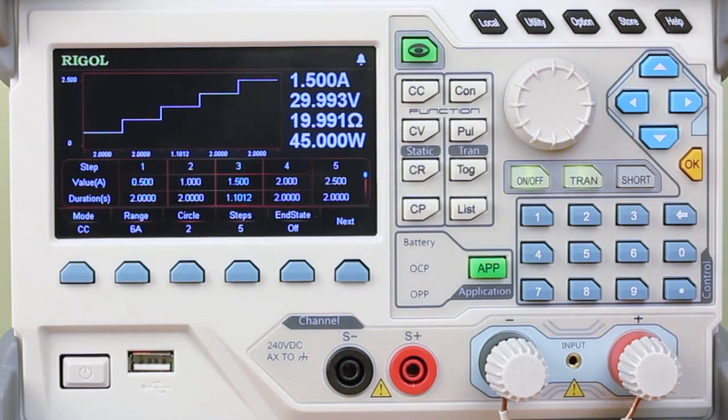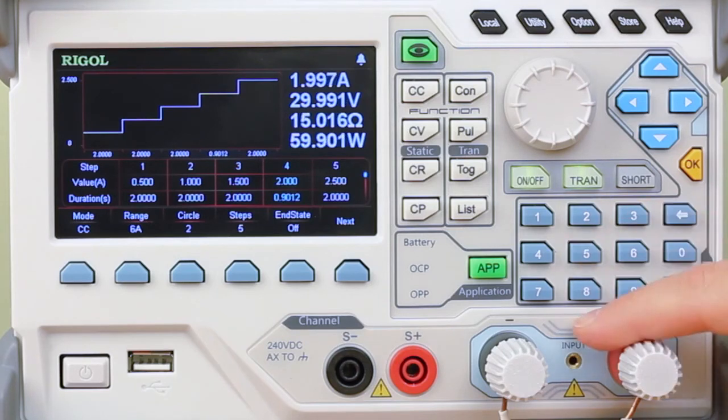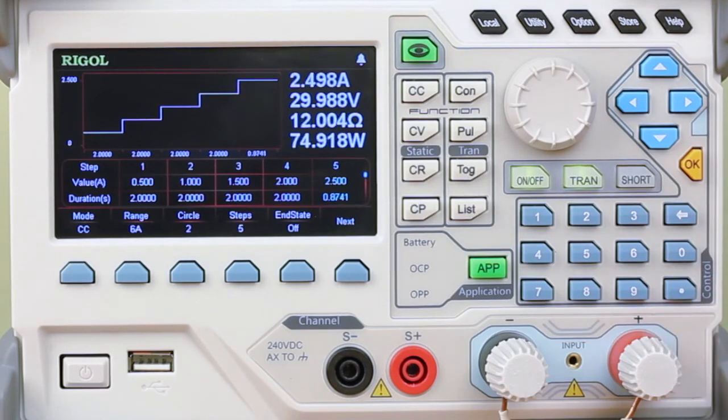Let's activate that. So here we can see, ramps up to 2.5 amps, starts again when I triggered it. And then it stops. So that was two 10 second sweeps from low current to high current.